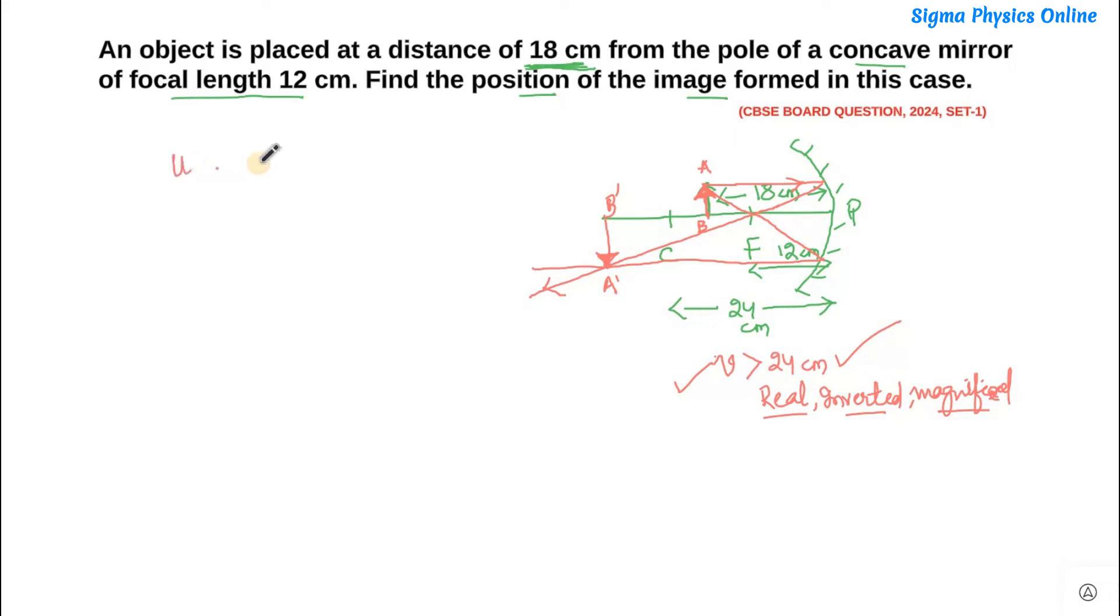Now the object distance is given as 18 cm. Since the object is placed in front of the mirror, to measure the object distance we have to go towards the left from the pole, so the value of u comes to be negative. Now the focal length of a concave mirror is also always negative, so I write here it is minus 12 cm. Now we'll solve for the image distance using the mirror formula, that is 1 by f is 1 by v plus 1 by u.